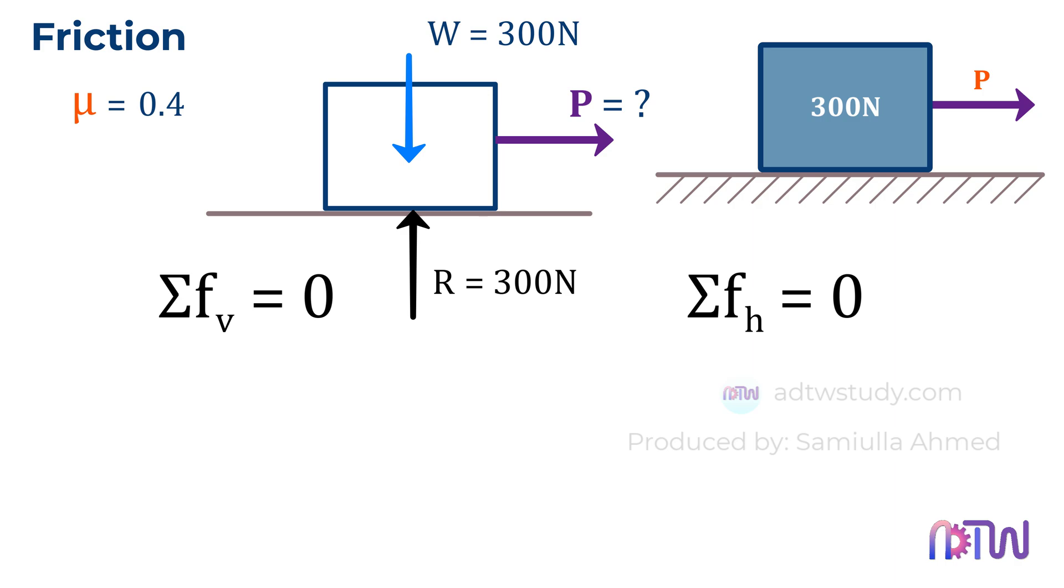To sum up the vertical forces, we consider forces acting vertically upward as positive and forces acting vertically downward as negative. We have the normal reaction force R minus the weight of the box, which is 300 newtons, equal to zero. Therefore, after rearranging, we get the value of the normal reaction force as 300 newtons.